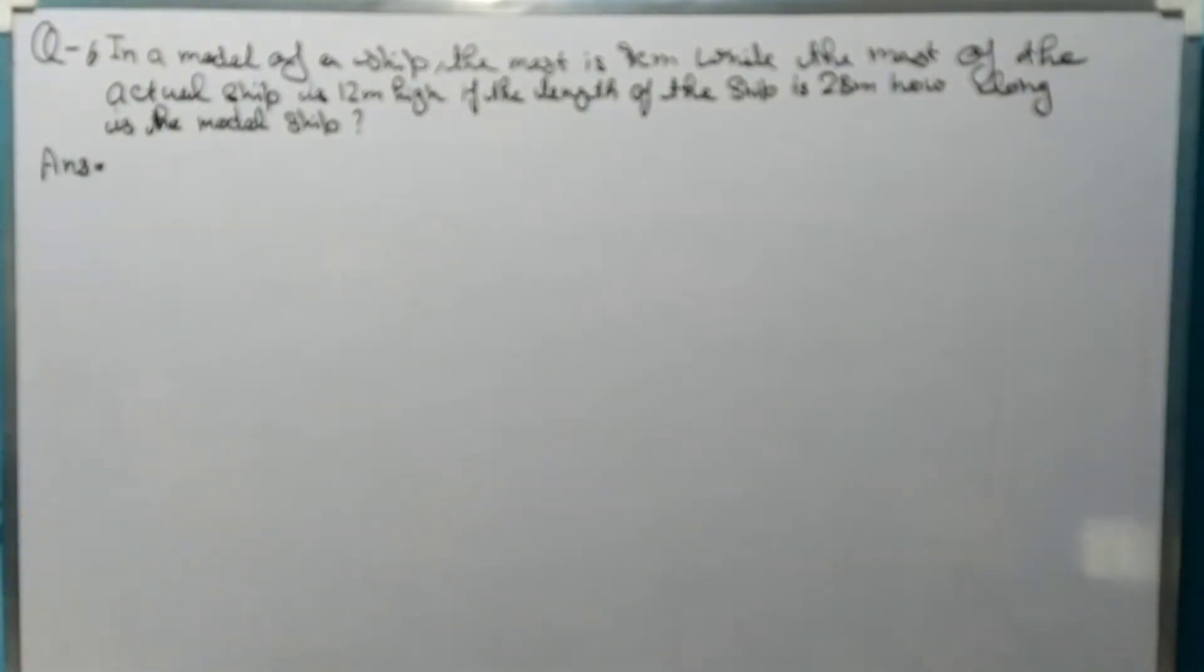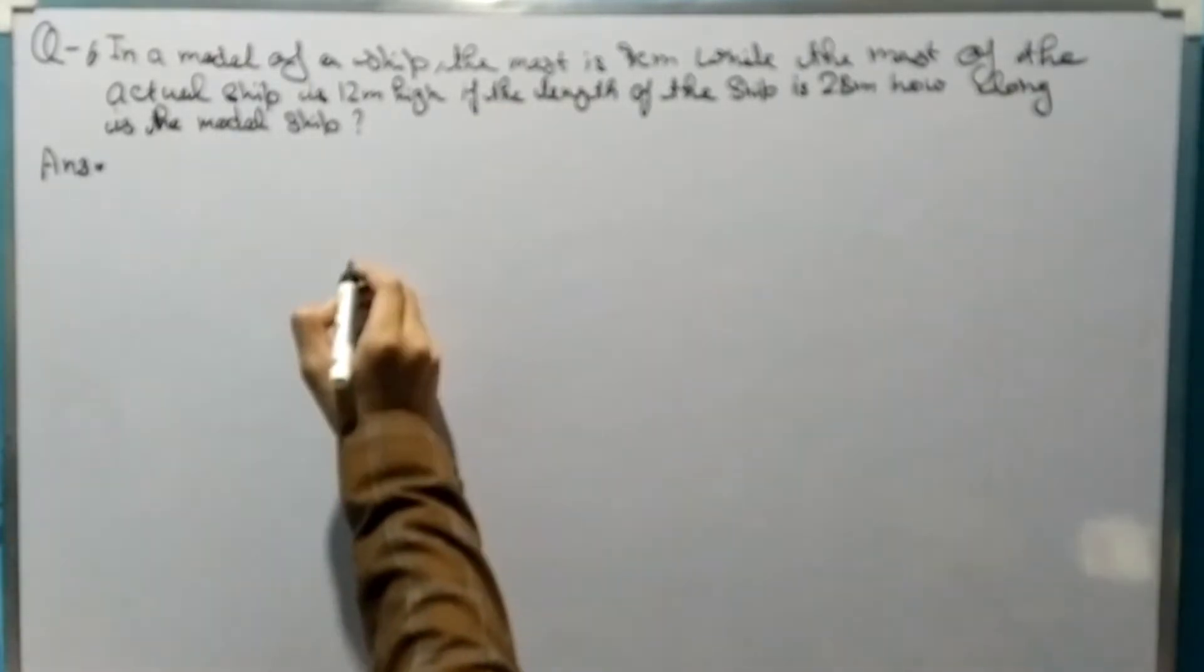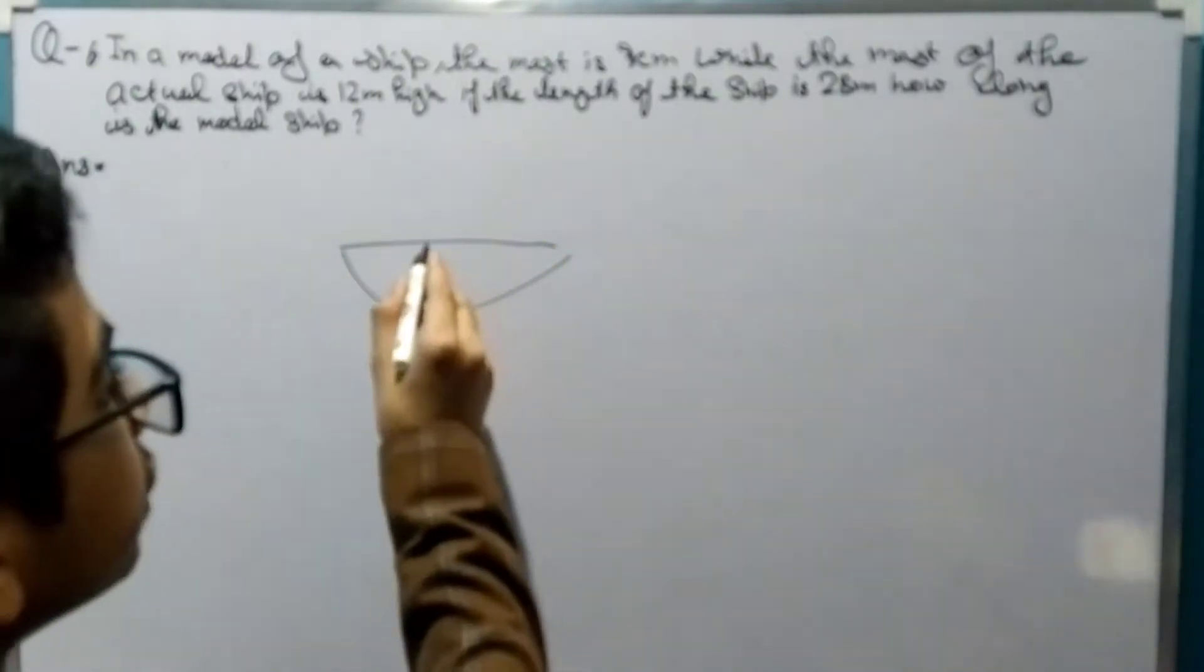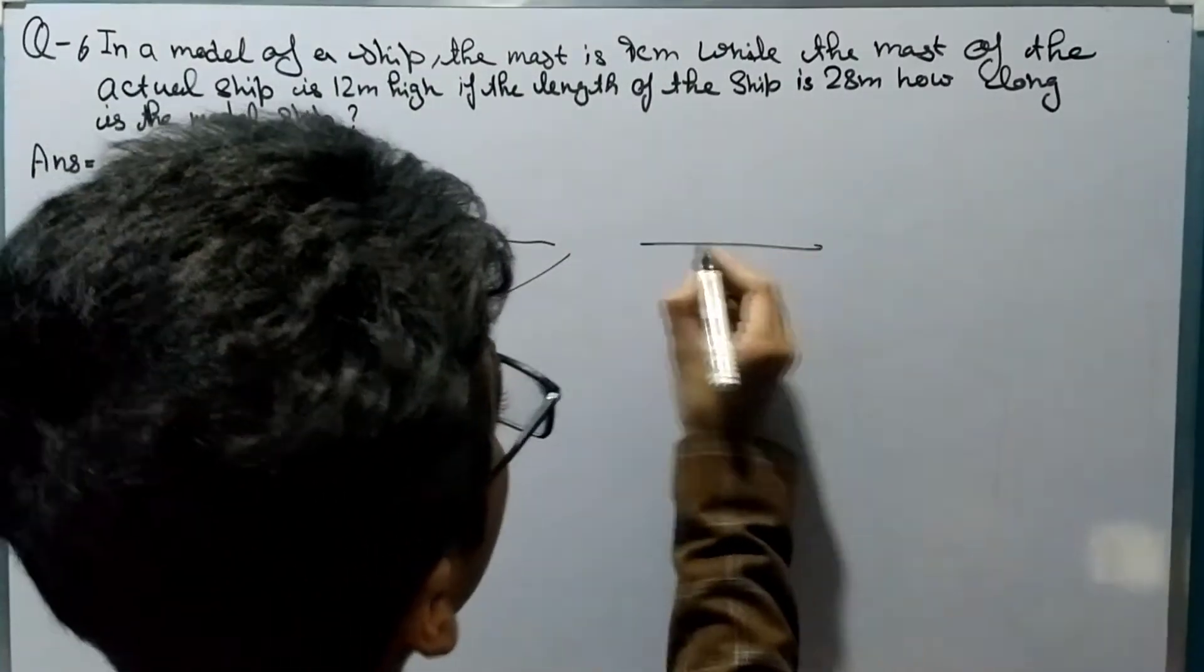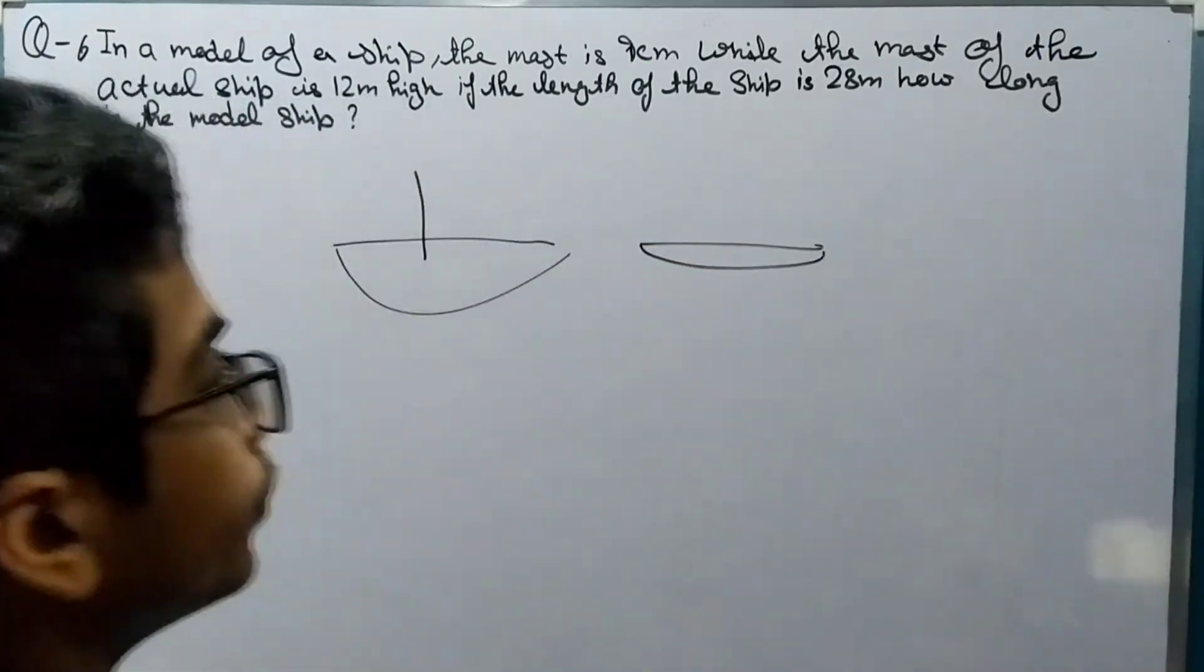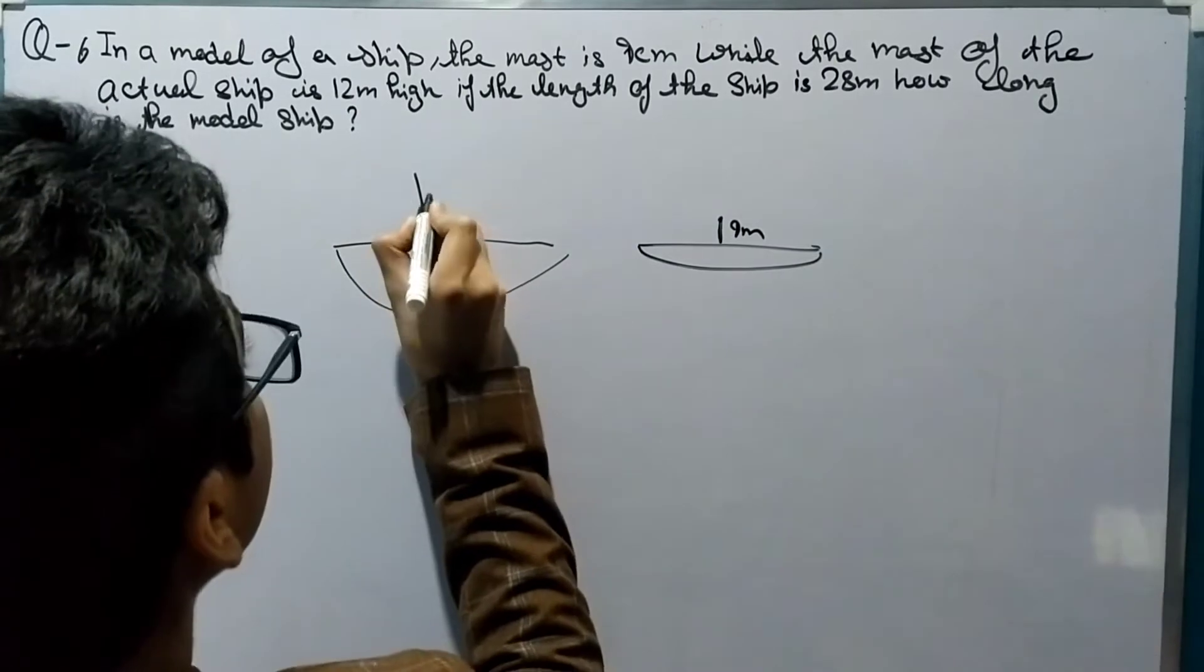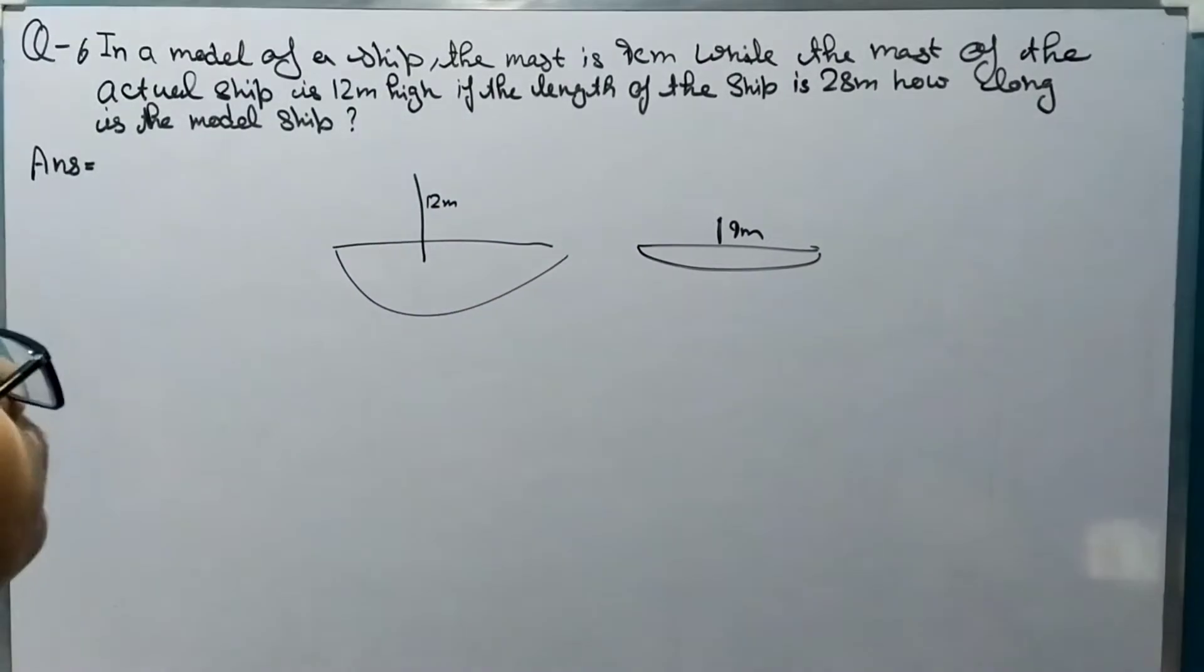If the length of the ship is 28 meter, how long is the model ship? So it means that there is a ship and of that ship there is a small model. So here it is 9 meter but actually it is 12 meter.